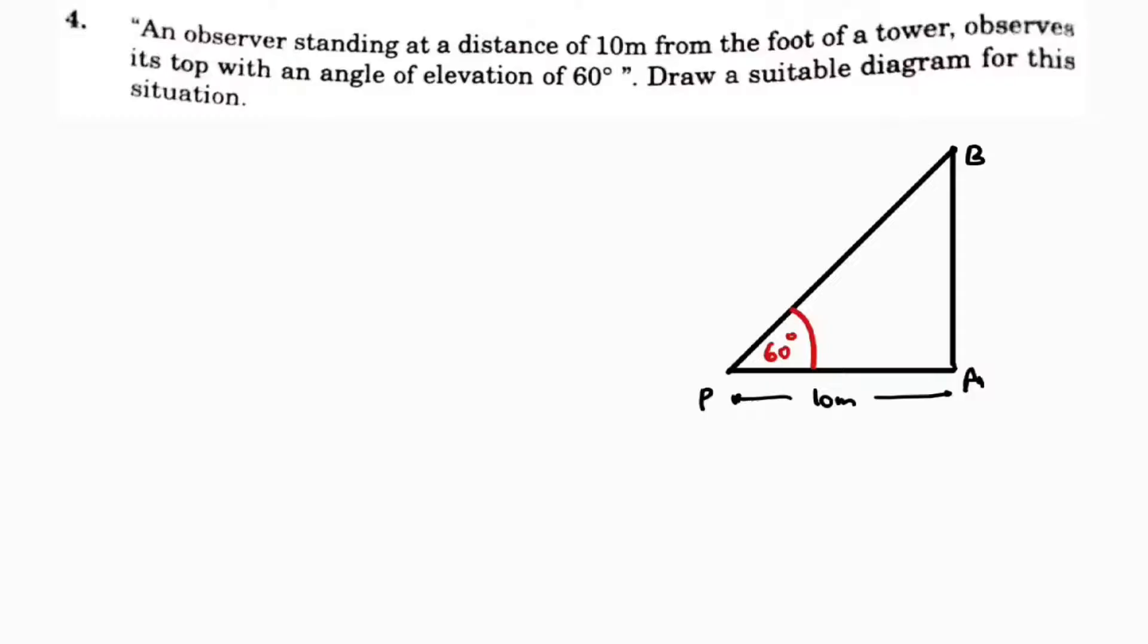Draw a suitable diagram. This is the diagram for this. If you write: AB is the height of the tower, and AP is 10 meters. A person is standing at P, and they give the angle of elevation.